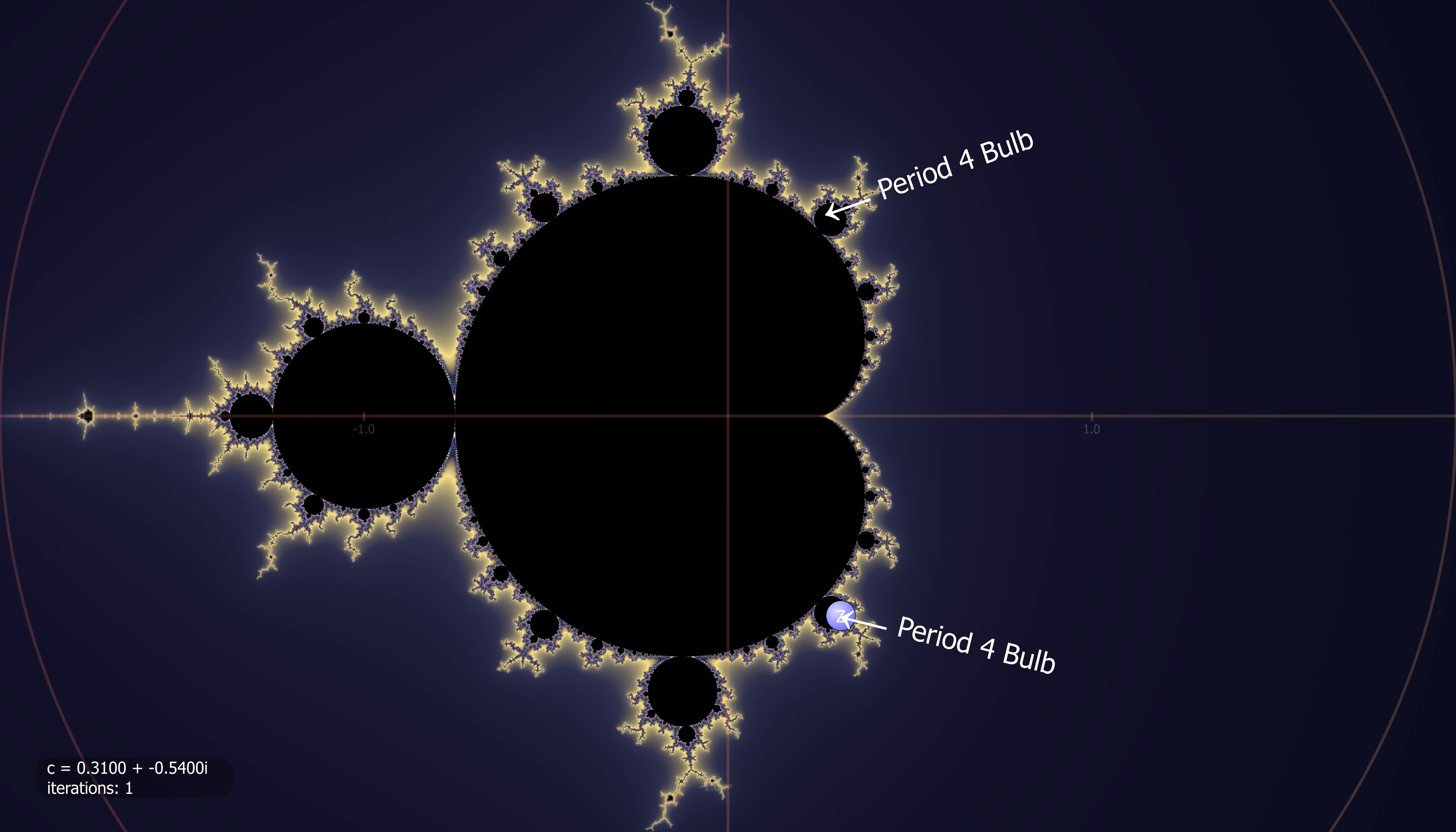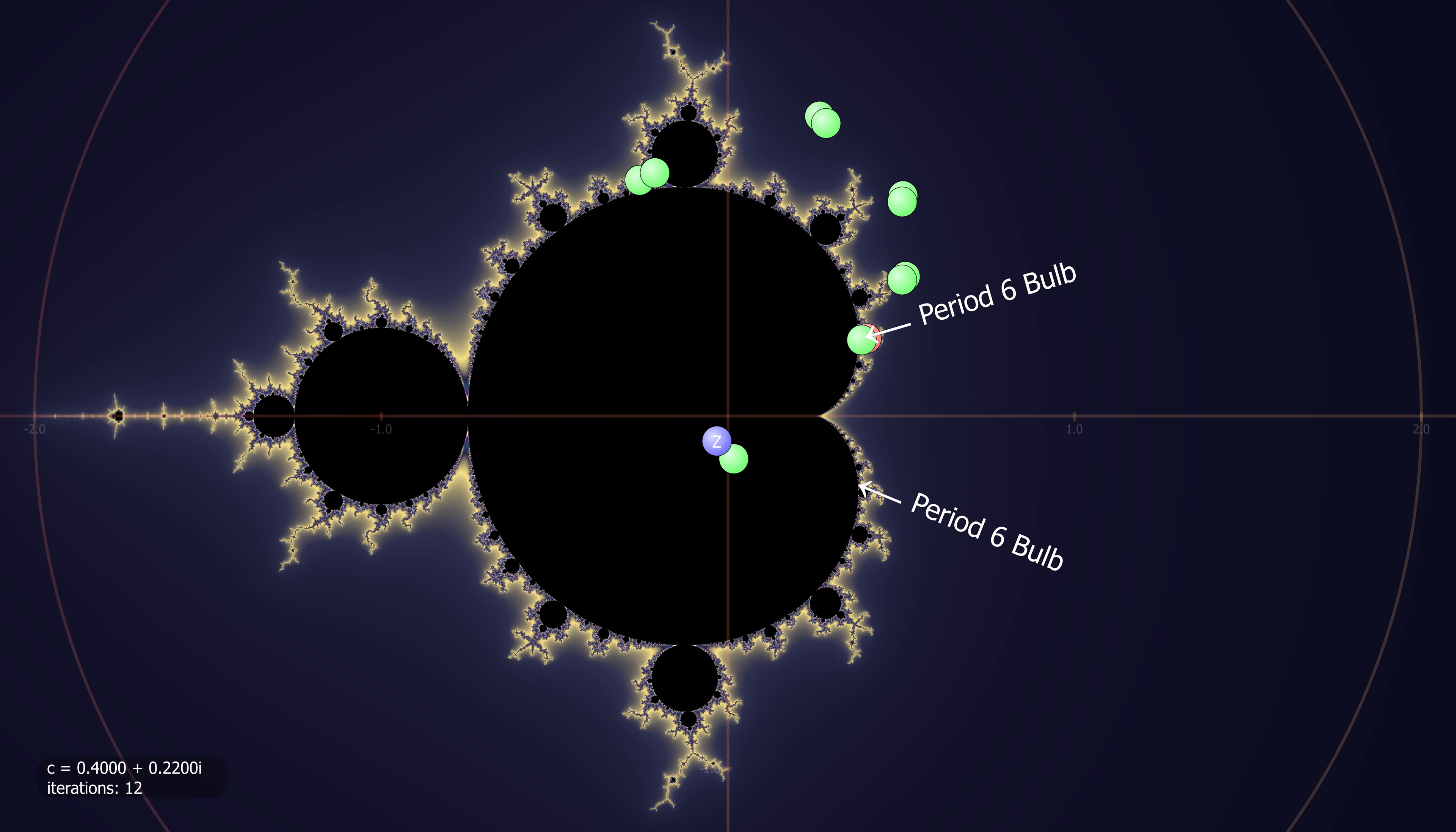Here is the period four bulb. Notice that wherever I start C within this bulb, the orbit settles down to four points. Here is the period five bulb. And here is the period six. I think you get the idea.